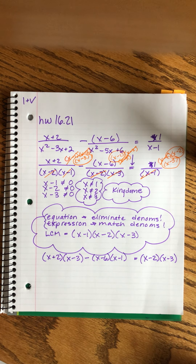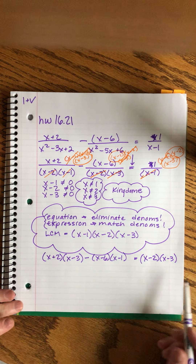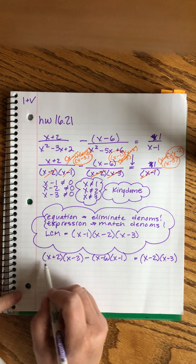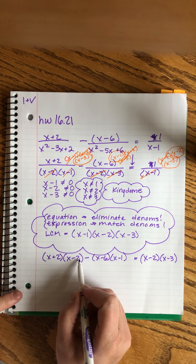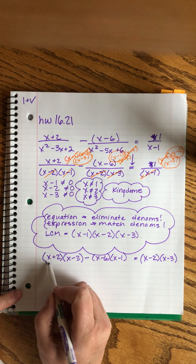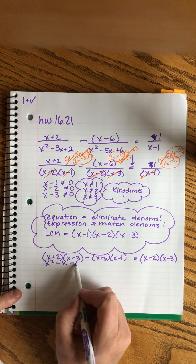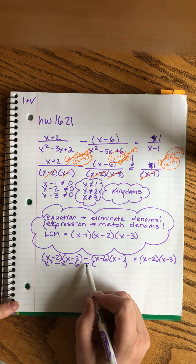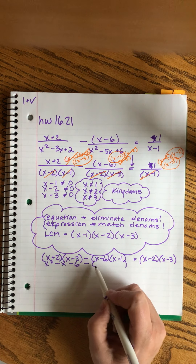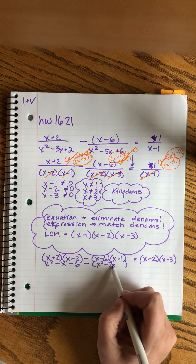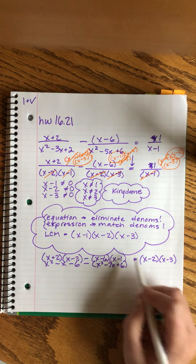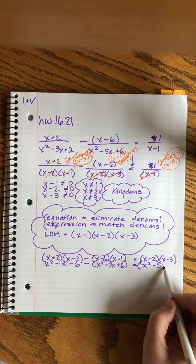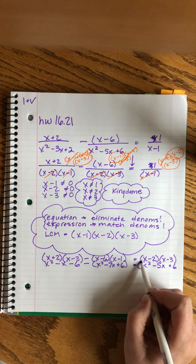Now what we want to do is take these back into their trinomial form again, so I'm going to rewrite them. We multiply the last two and then add them for the middle. So that'll be x² − x − 6, minus — I'm going to keep this in parentheses because that minus sign is still lurking — (x² − 7x + 6) equals x² − 5x + 6.